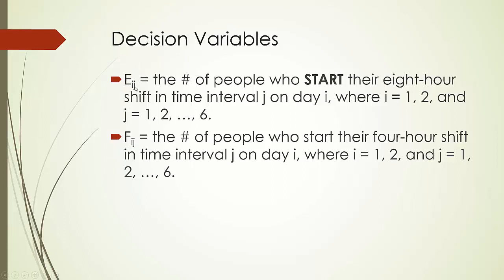And what exactly is E_ij? That is the number of people who start their 8-hour shift in time interval j on day i. For example, E_11 is the number of 8-hour people who start their shift at midnight of day 1. Similarly, E_12 is the number of 8-hour people who start their shift at 4 a.m. of day 1, and so on and so forth.